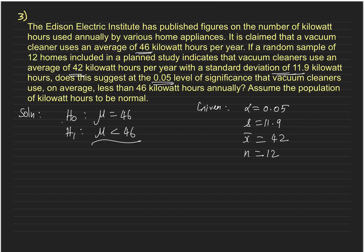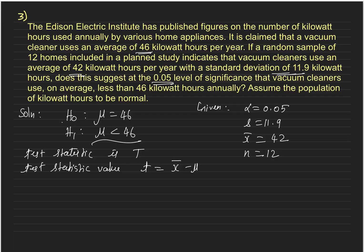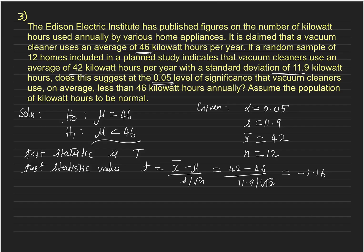The population standard deviation is not given, so the test statistic is t. The test statistic value is t equals x-bar minus mu divided by s over root n. Substituting the values, we get t₀ approximately equal to minus 1.16.